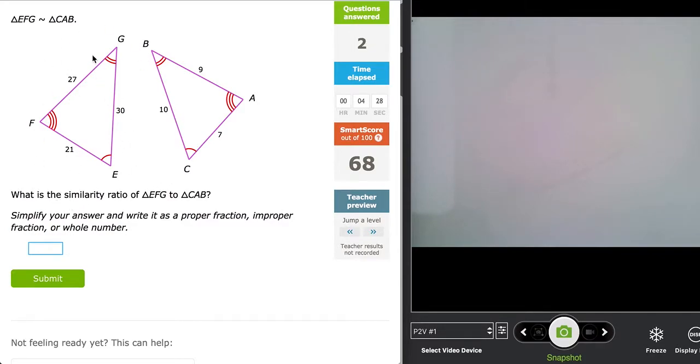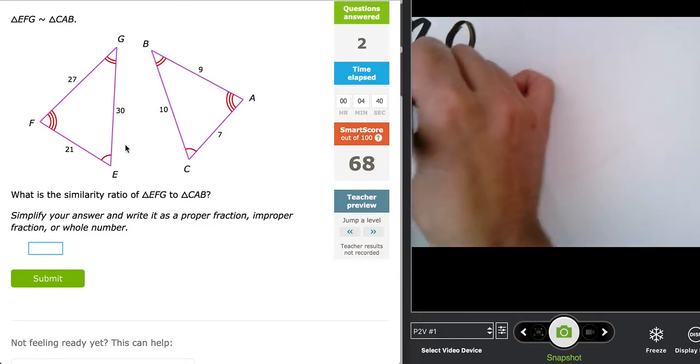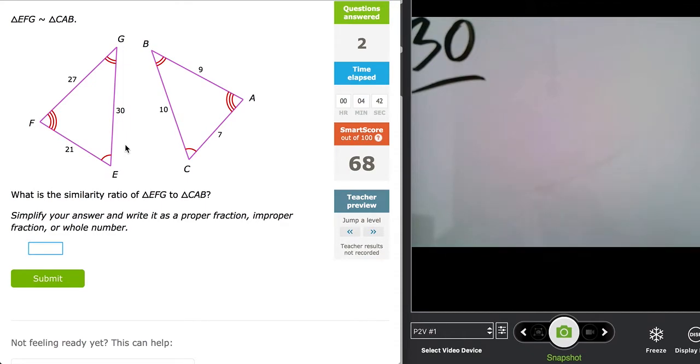What is the similarity ratio of these two triangles? So I'm going to take the side that is between the one arc and the two arcs which is 30, and I'm going to now set that 30 over, where's the one and two arcs. One to two arcs would be 10.